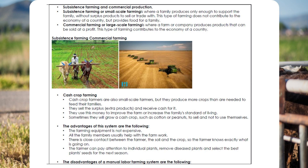Cash crop farming: cash crop farmers are also small-scale farmers, but they produce more crops than are needed to feed their families. They sell the surplus or extra products and receive cash for it. They use this money to improve the farm or increase the family's standard of living. Sometimes they will grow a cash crop, such as cotton or peanuts, to sell and not to use themselves.